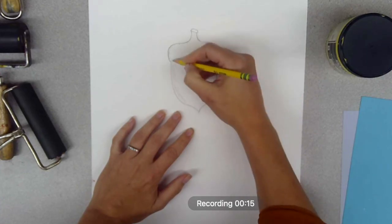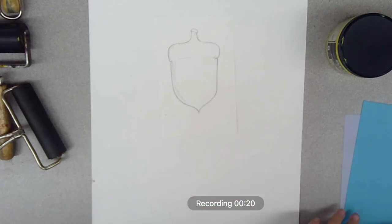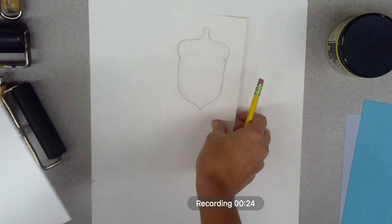I drew an acorn, but notice I'm just doing the basic outline of this acorn. I'm not putting the details into the shape. Basic outline, that's what you want to start with whatever it is you're drawing.